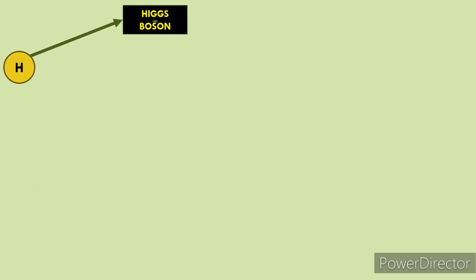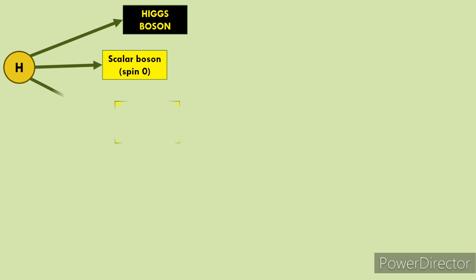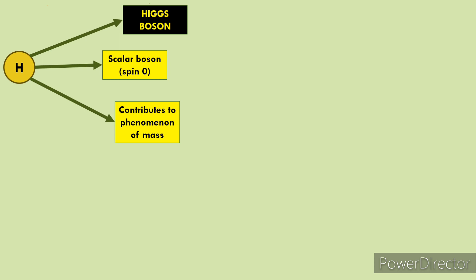The first type of boson is the Higgs boson. Higgs boson is a scalar boson, which has a spin of 0. It is responsible for the phenomenon of mass — jo mass hum apne aaspaas dekhte hain, uske liye Higgs boson responsible hai. Ise God particle bhi kaha jaata hai.